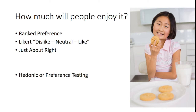Likert doesn't tell you what direction to take an attribute — up or down — but gives you a sense of how people feel about it. Just about right gives you that directionality: 'I need to add more spice,' 'more peanut butter,' or 'less salt.' These are all different styles of hedonic or preference testing, and these three are pretty straightforward for small businesses and early-stage sensory practitioners.